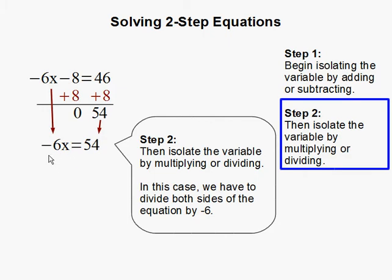Now this is negative 6 times x. So in order to get rid of the negative 6, we have to do the opposite. Since this is negative 6 times x, we would divide by negative 6 to cancel out the negative 6.